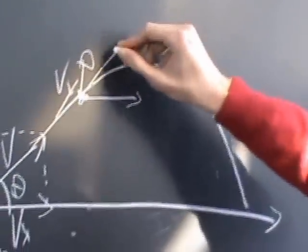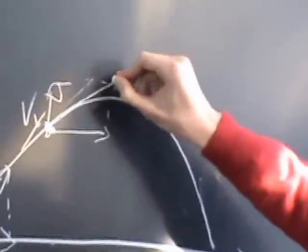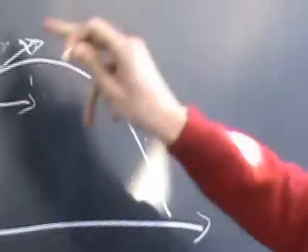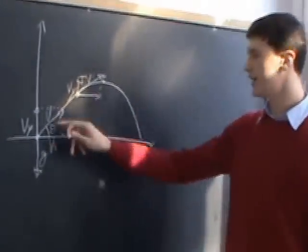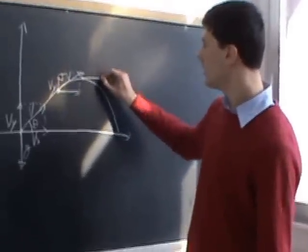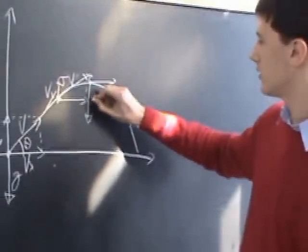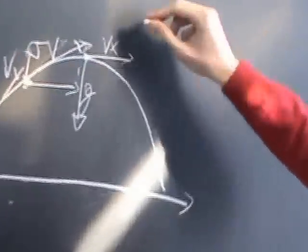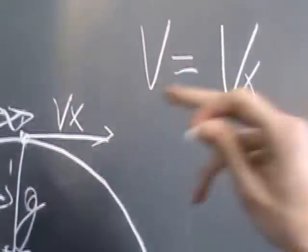The total velocity, which is always tangent to the trajectory, changes its magnitude and its direction. In this particular point, which is the vertex of the parabola, vy is equal to zero, and there is always g, and this is vx. So, in this point, v equals vx — only in this point.